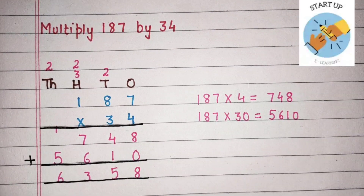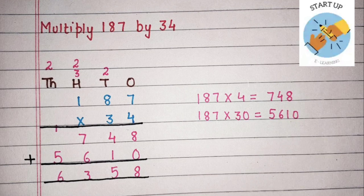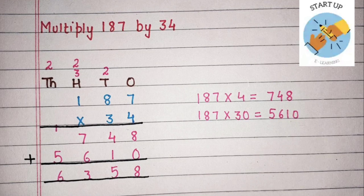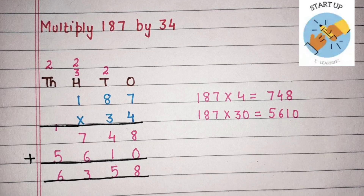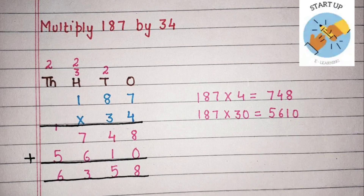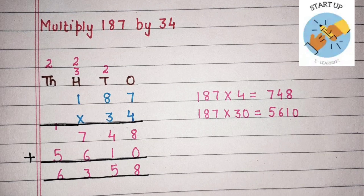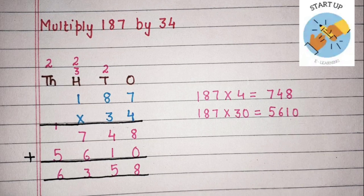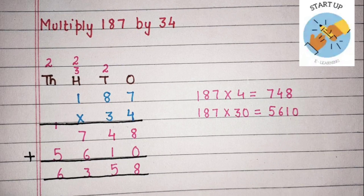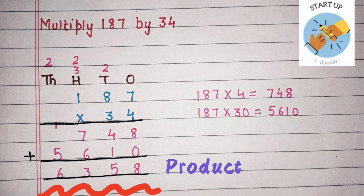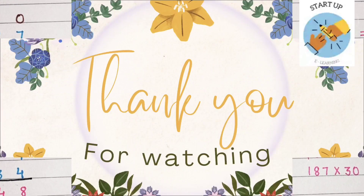We always start the addition sum from 1's place. 8 + 0 = 8. 4 + 1 = 5. 7 + 6 = 13, and then 1 will be carried on 1000's. So 5 + 1 = 6. Here we have got the final product, that is 6358.